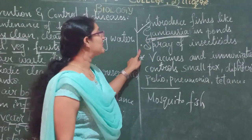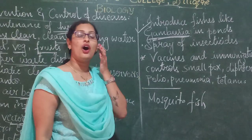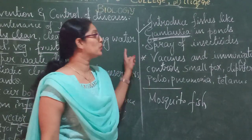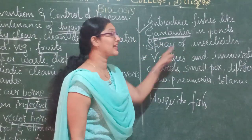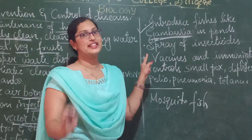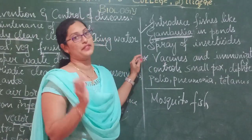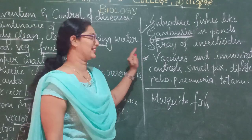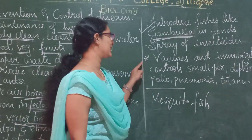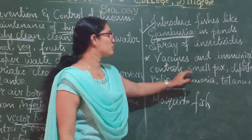Spray of insecticides — you can spray insecticides in swamps, marshes, or drainages. This will cause poor quality of soil, but to keep insects away, you will have to spray insecticides.